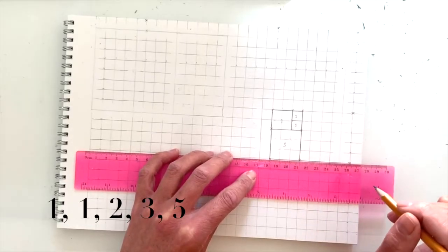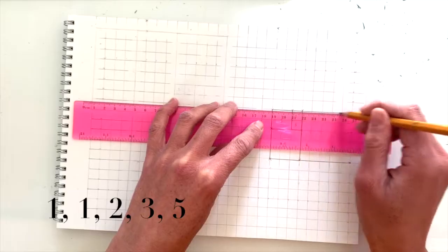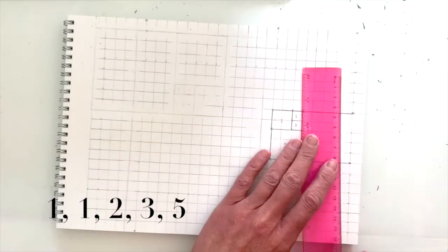Two plus three equals five, so the next box is five centimeters across. Hopefully you're able to follow along at home.